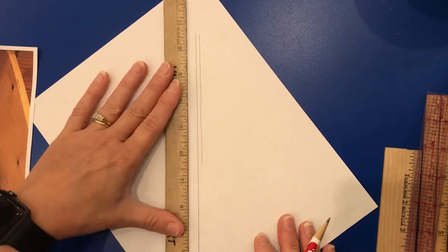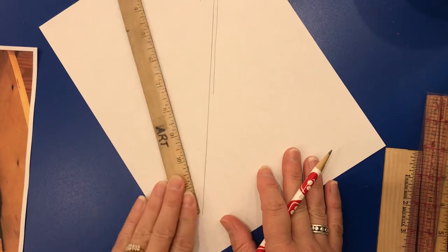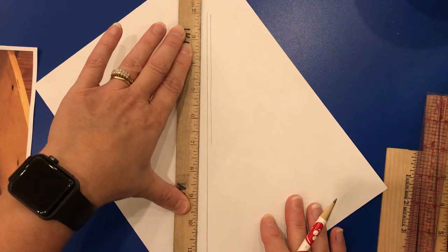So that's how you use a ruler. That's how you hold a ruler, not way down here where it can shift, but more towards the middle, holding it down so it'll stay in place.